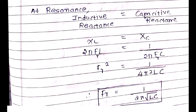At resonance, inductive reactance equals capacitive reactance. The inductive reactance is given as XL and the capacitive reactance as XC. XL equals 2πfL, and XC equals 1/(2πfC). Since we are talking at resonance, frequency is denoted fr. Solving for fr: fr² = 1/(4π²LC), therefore fr = 1/(2π√LC). This is the resonant frequency.